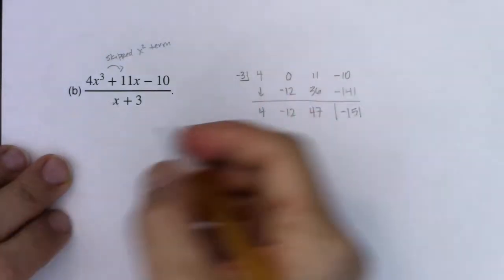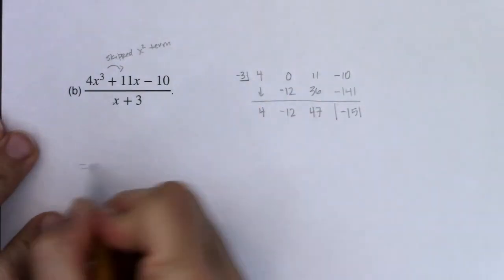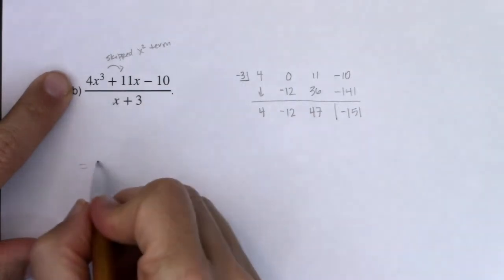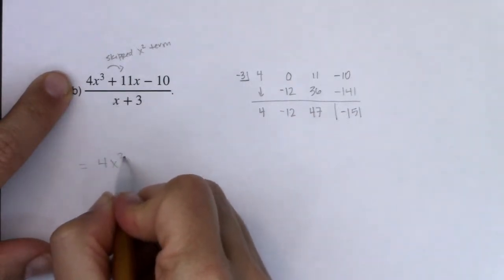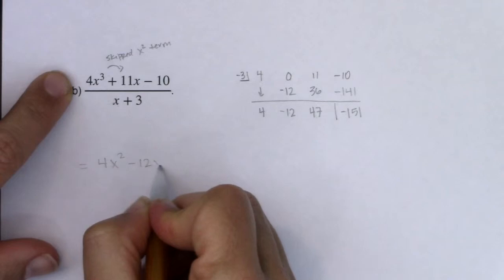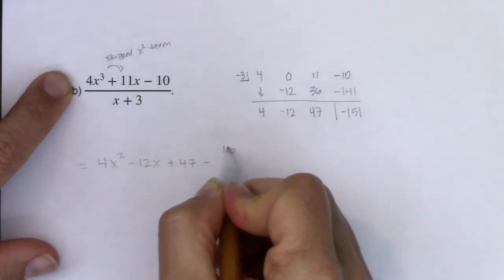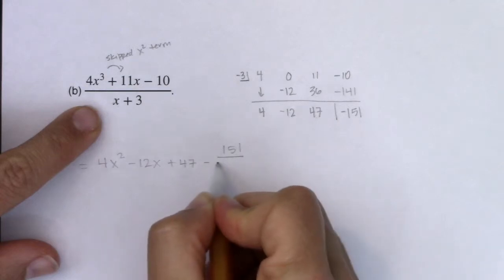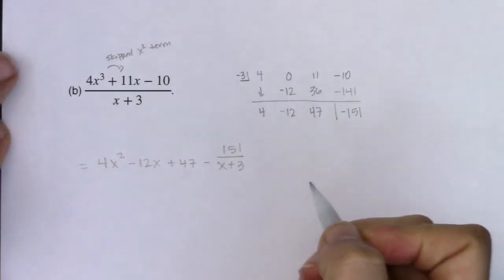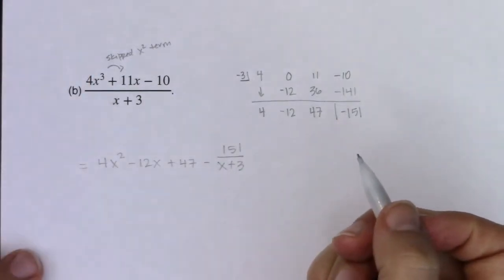All right. So I've got my numbers. So if I want to figure out what this quotient is, started with x cubed, I'm going to lose a power. So this is 4x squared minus 12x plus 47 minus, I have 151 in ratio to x plus 3. So that's what this quotient is equal to.